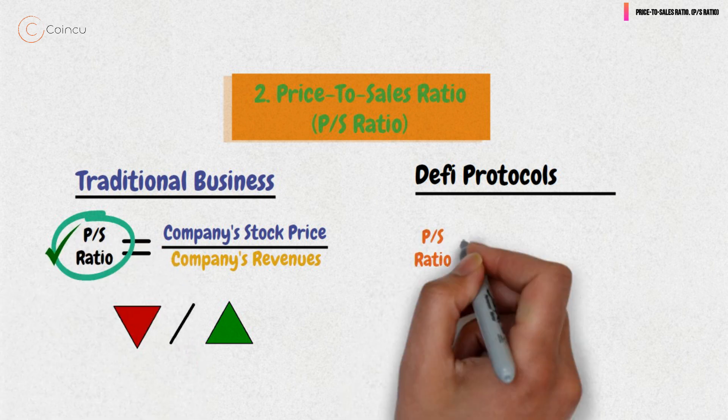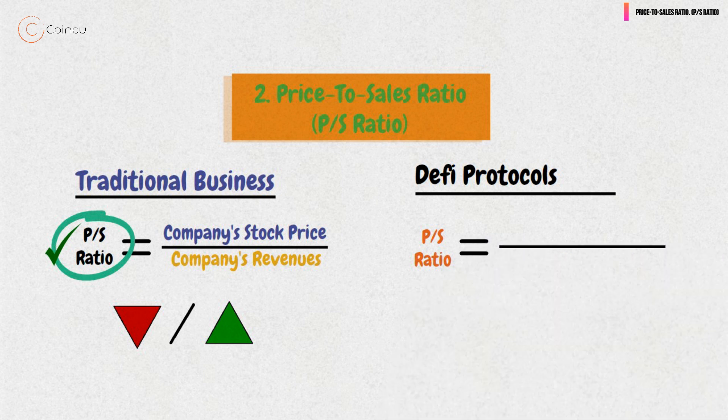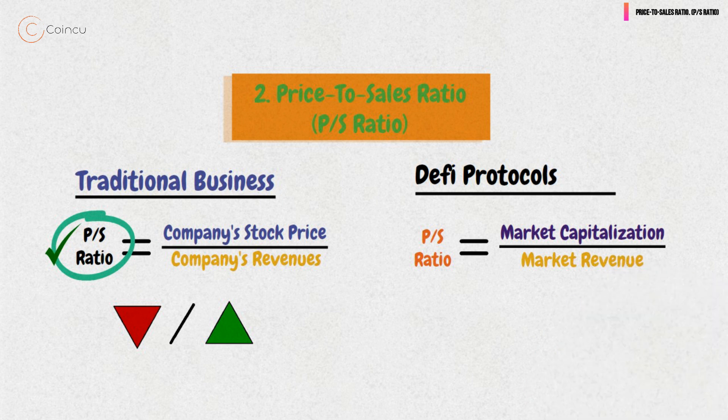Since many DeFi protocols already generate revenue, a similar metric can be used for them as well. How can you use it? You'll need to divide the market capitalization of the protocol by its revenue. The basic idea is that the lower the ratio is, the more undervalued the protocol may be.